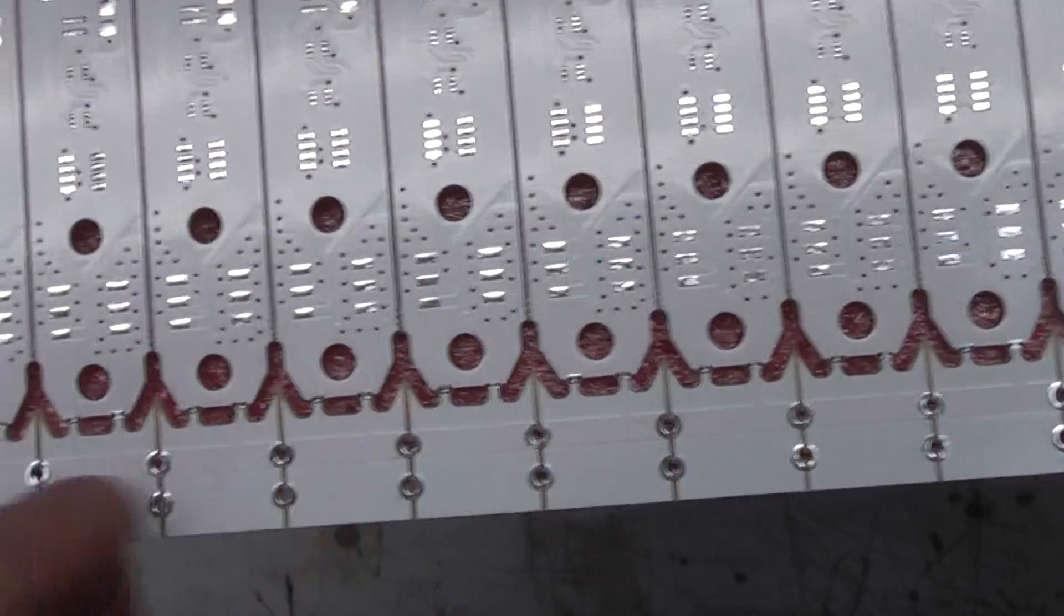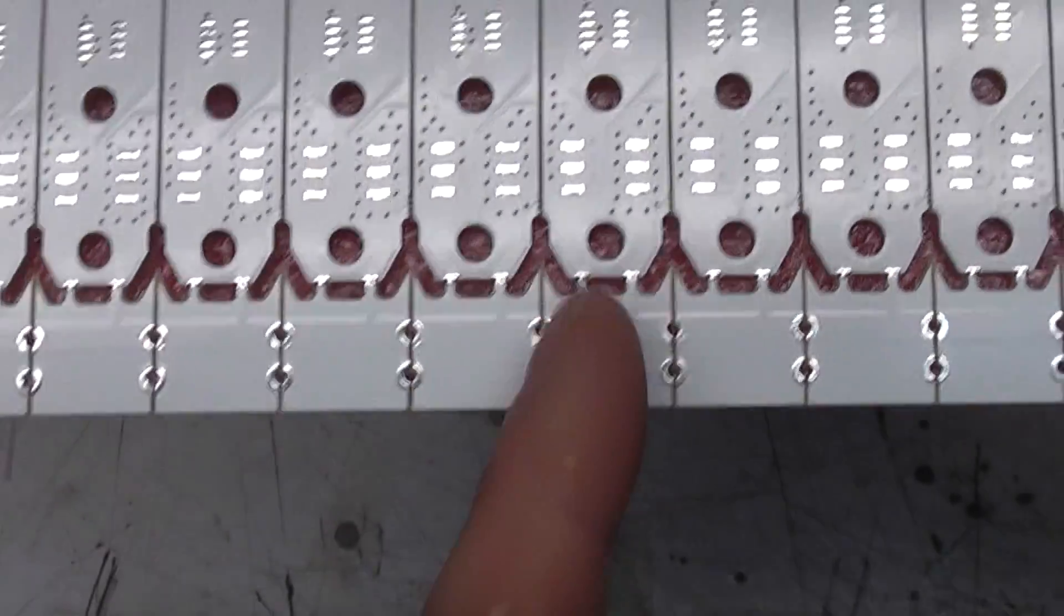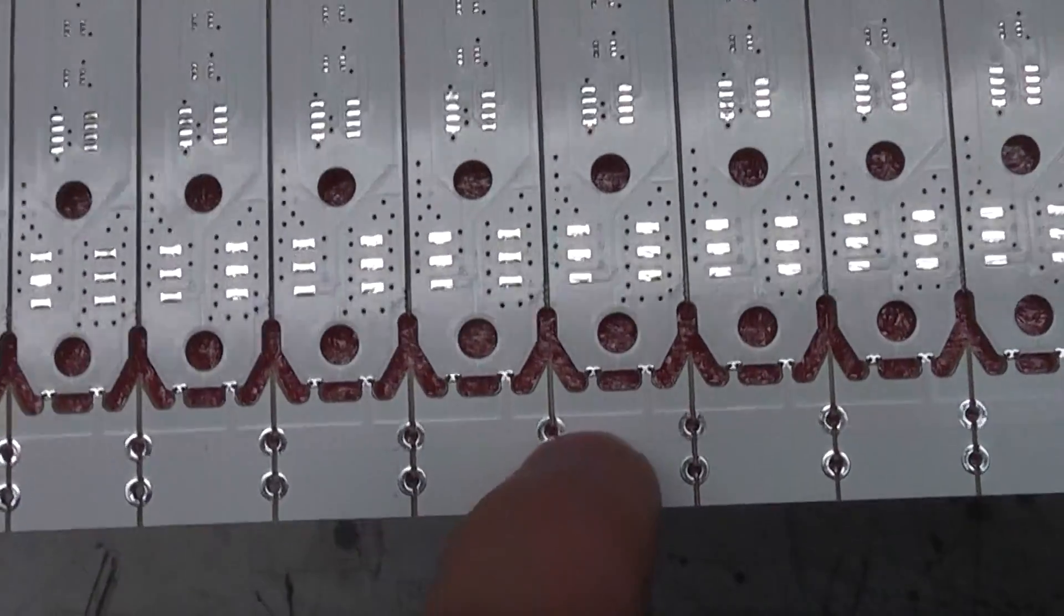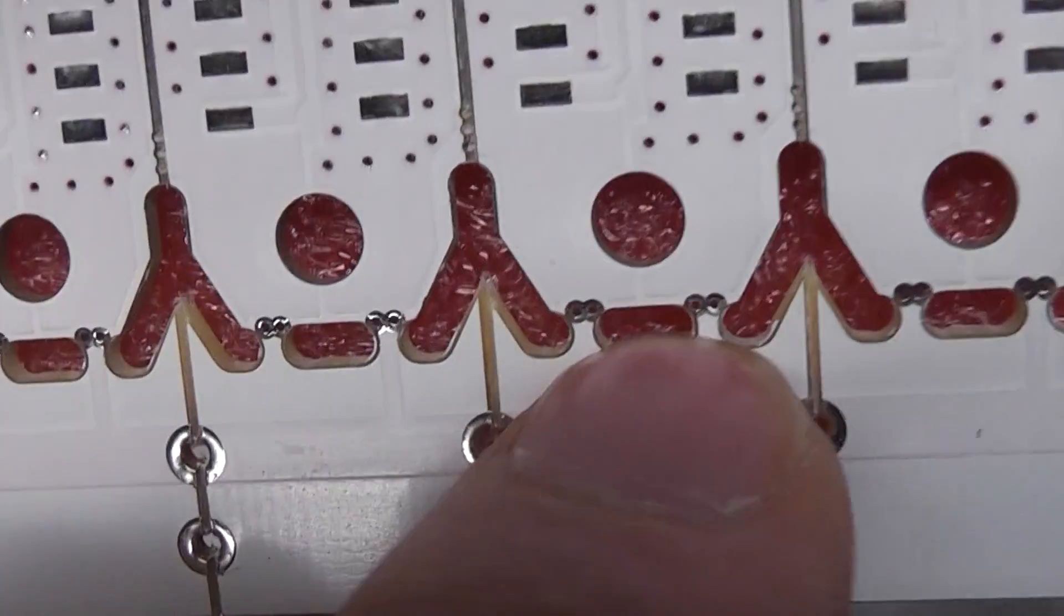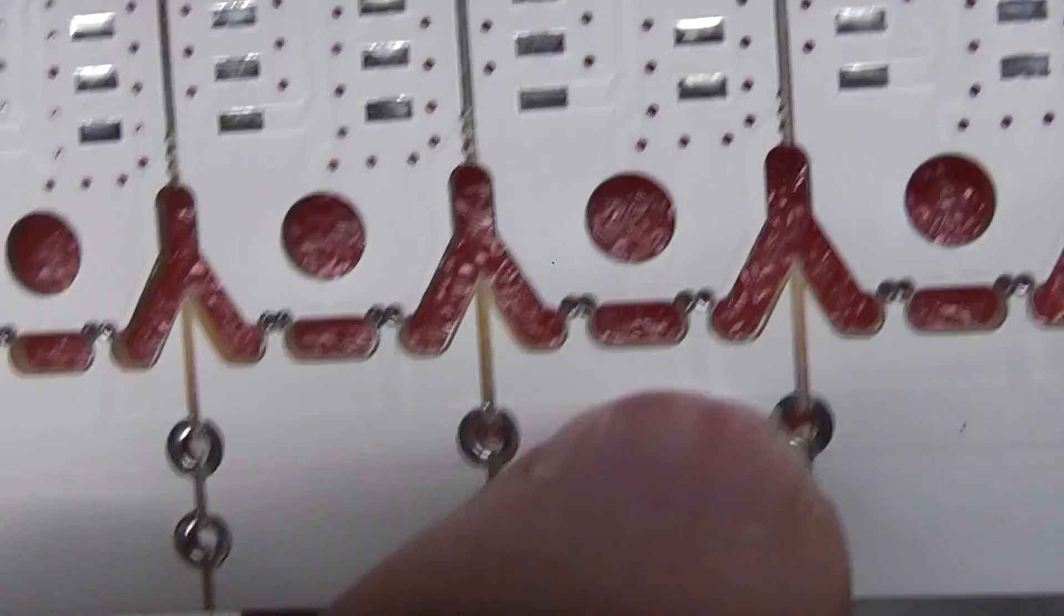So these horizontal tracks, although they've been scored through, there's actually enough plating left in that hole to maintain the connectivity. And then I've just got a couple of little breakout tabs on here to make the electrical connection.